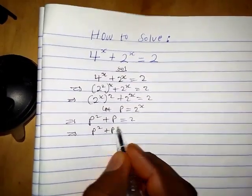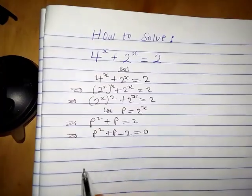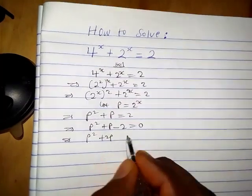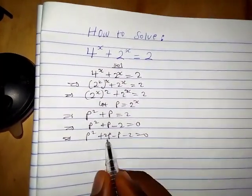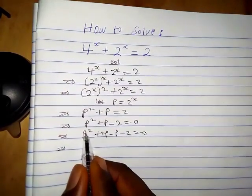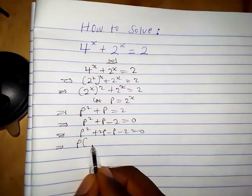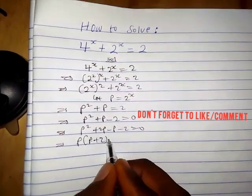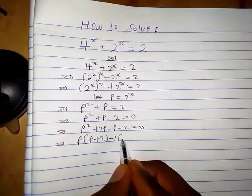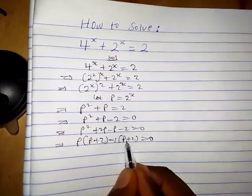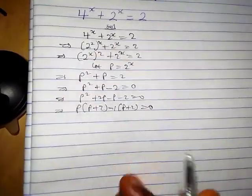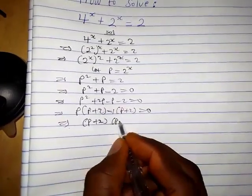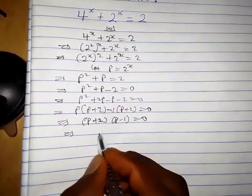This also implies that p squared plus p minus 2 equals zero. Now let's factorize: we have p squared plus 2p minus p minus 2 equals zero, because 2p minus p gives back p. So p is common in the first pair: p times (p plus 2). Then negative 1 is common in the second pair: minus 1 times (p plus 2) equals zero. So (p plus 2) is common and we factor it out with (p minus 1).